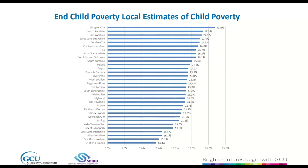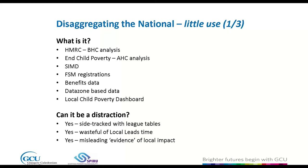National data that can be disaggregated locally — shown here in a kind of league table approach — includes data from the End Child Poverty Collective, which gives an estimate of the extent to which child poverty prevails across the 32 local authorities in Scotland. We have HMRC estimates of relative child poverty measured on a before-housing-costs basis. The End Child Poverty Collective also uses HMRC data with additional modelling to produce an after-housing-costs estimate, which is the measure used in the 2017 Child Poverty Act.